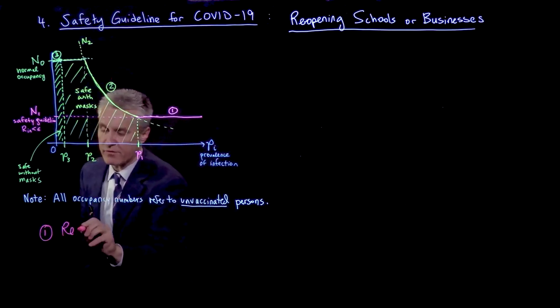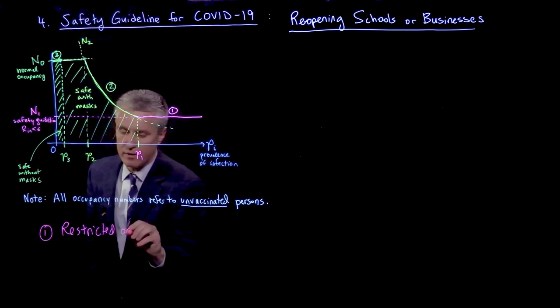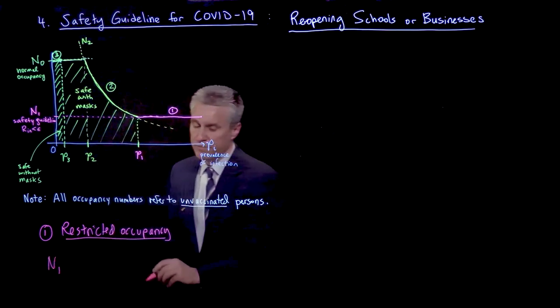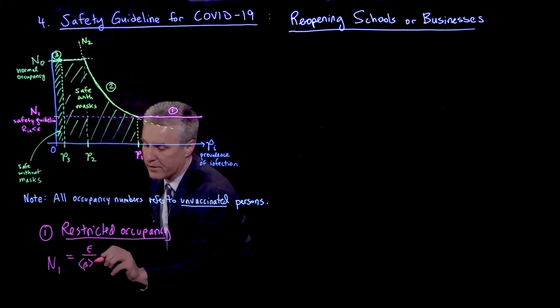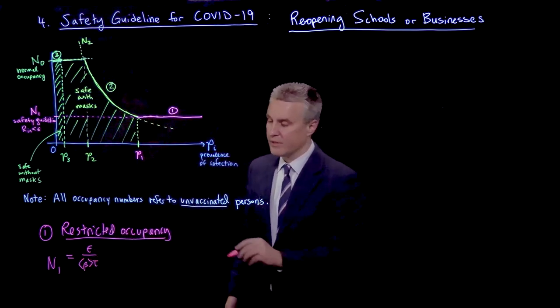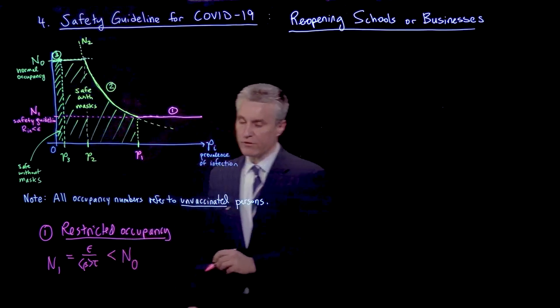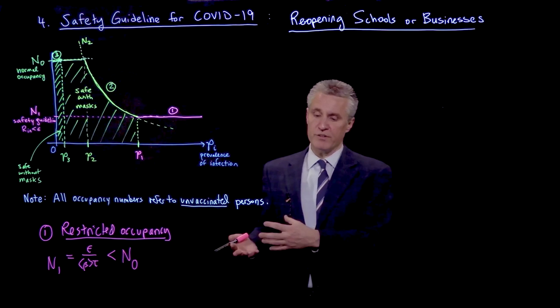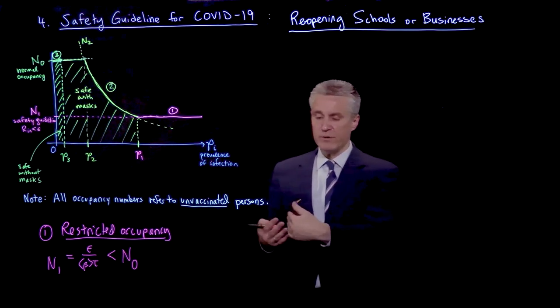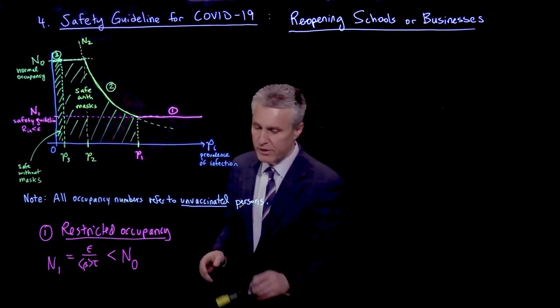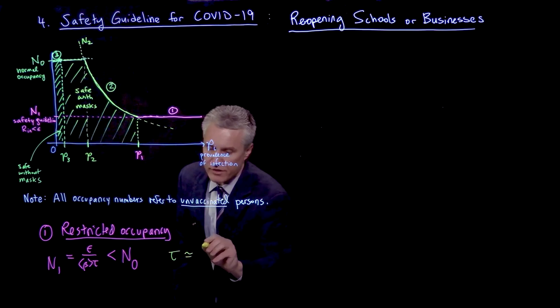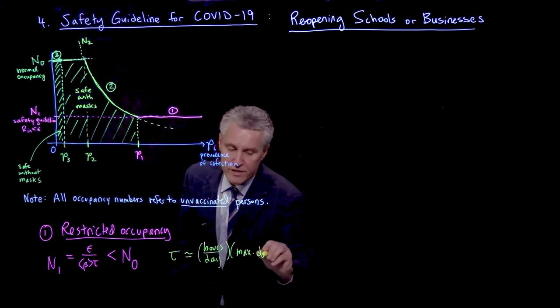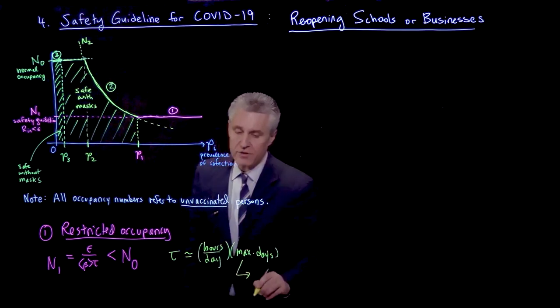So the first one is where we have restricted occupancy. This is where we've decided there's an N1, which is epsilon over average beta tau. So all the physical parameters are buried in there. And this is going to be something less than the normal occupancy, N0. Now, what is the tau we want to think about? Well, if we have a school or business, this would be the cumulative time that people spend together to the point where the number of days they spend together is, let's say, on the order of a week, would be a reasonable number to think about.